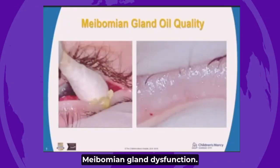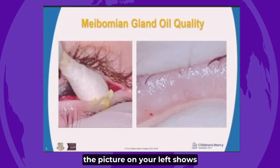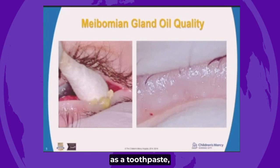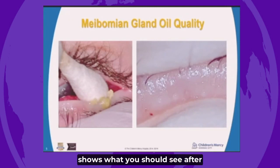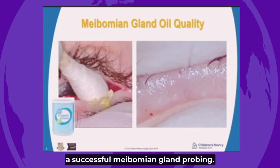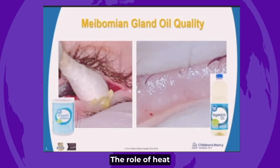Meibomian Gland Dysfunction: poor gland oil quality. The picture on your left shows the material expressed as a toothpaste, while the picture on your right shows what you should see after successful Meibomian gland probing.